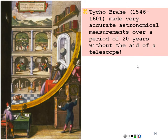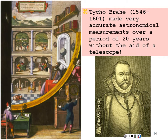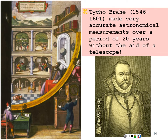A little bit after that, we had Tycho Brahe, 1546 to 1601 — born three years after Copernicus died — who was the best astronomer of his day. He made very accurate astronomical measurements over a period of 20 years without the aid of a telescope, using a very large sextant to record the positions of the planets. These were the most accurate data on the planets for the next 300 years.